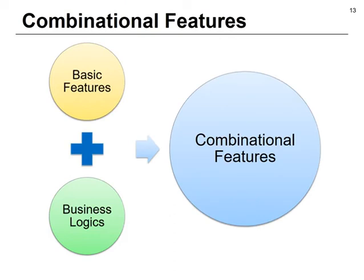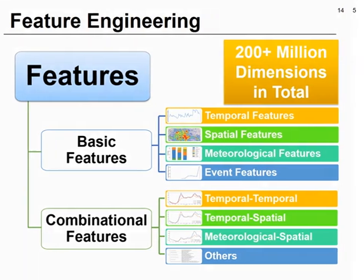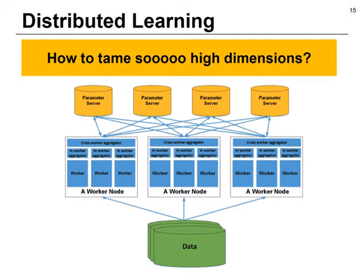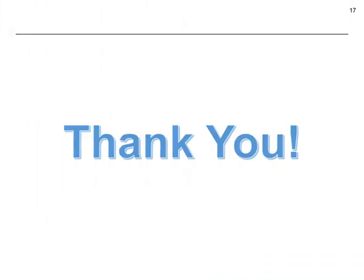Combinational features come from the analysis of business logics. I only need to analyze the basic features and combine them effectively based on business logics. After careful feature engineering, I come up with massive features of more than 200 million dimensions. To deal with features with such high dimensions, I use a distributed learning framework. Experimental study also demonstrates that our approach has good results. For more details, please come to our presentation at KDD 2017 or contact us.